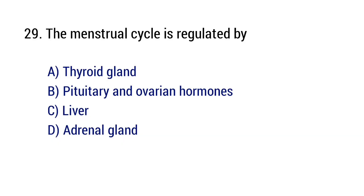Question number 29. The menstrual cycle is regulated by? The right answer is option B: Pituitary and ovarian hormones.